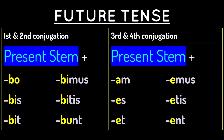The future tense in Latin is a little different than the other tenses because it behaves differently in the first and second conjugation than in the third and fourth conjugation. This video is going to talk about a second conjugation verb.